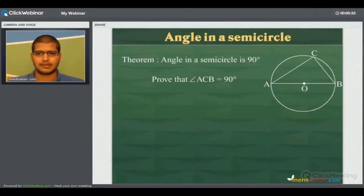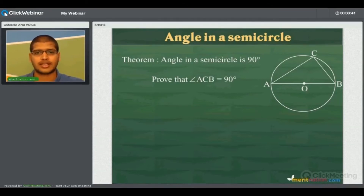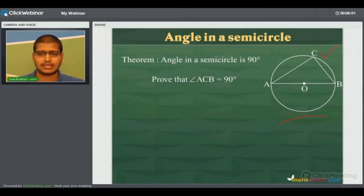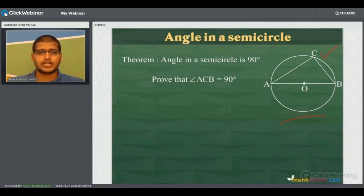We will prove that the angle in a semicircle is 90 degrees, and using this theorem we will see how to construct the tangents to a circle from an external point. First, let us prove that the angle in a semicircle is 90 degrees. For that, consider a circle with diameter AB and take any point C on the semicircle, then join C with points A and B, the ends of the diameter, to form triangle ABC.